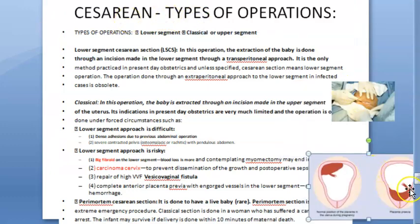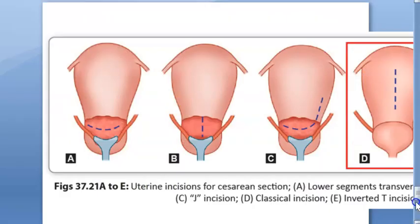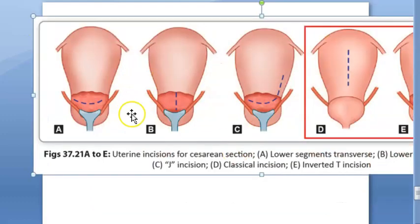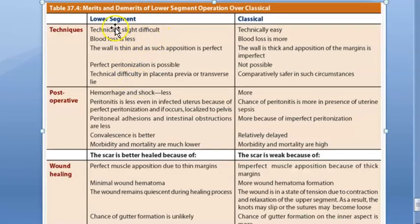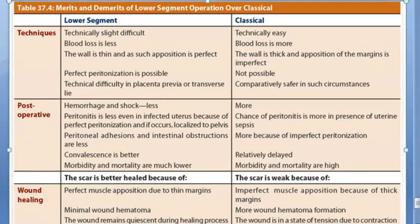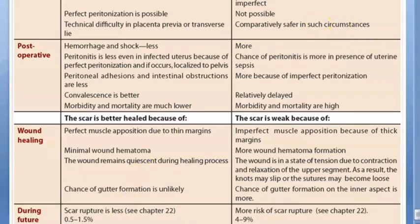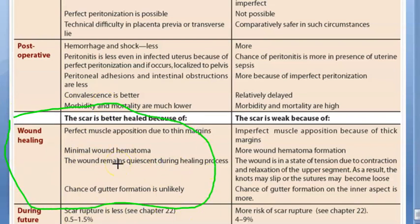Whenever they say cesarean, they mean lower segment cesarean section. Now let's look at the merits and demerits of lower segment versus classical. The technique of lower segment is actually more difficult, but you still do it because the upper segment undergoes contraction and relaxation, whereas the lower segment remains quiescent.